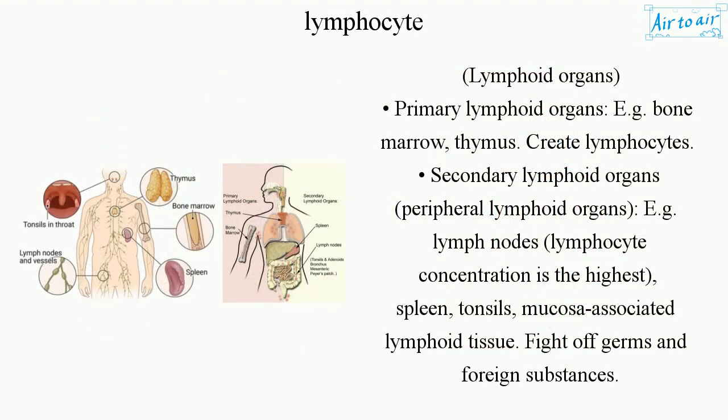Lymphoid organs. Primary lymphoid organs (e.g., bone marrow, thymus) create lymphocytes. Secondary lymphoid organs, or peripheral lymphoid organs (e.g., lymph nodes — where lymphocyte concentration is the highest — spleen, tonsils, and mucosa-associated lymphoid tissue), fight off germs and foreign substances.